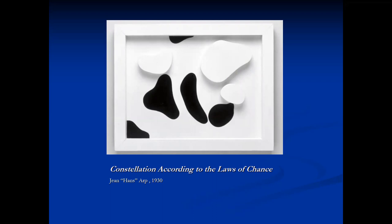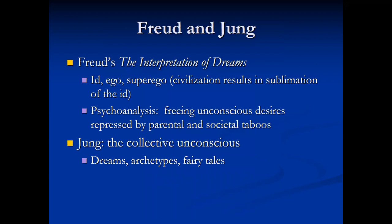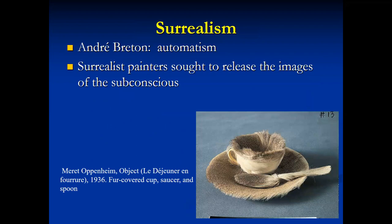The work of psychologists Sigmund Freud and Carl Jung influenced the work of 20th century artists, particularly those associated with surrealism. Freud's interpretation of dreams made popular the practice of dream analysis and the tapping of the subconscious. Freud categorized the mind into three parts: the id (instincts), ego (reality), and superego (morality). The development of civilization results in the sublimation of the id. Through the process of psychoanalysis, people could free their unconscious desires that were repressed by parental and societal taboos. Carl Jung wrote about the theory of the collective unconscious — that all humans share a common memory in our subconscious, expressed in our dreams, archetypes, stories, and fairy tales. Surrealist painters sought to release the images of the subconscious. André Breton used automatism to draw and paint images automatically to try and tap into the subconscious — like stream of consciousness writers, he would draw quickly and without stopping and let the images reveal themselves.